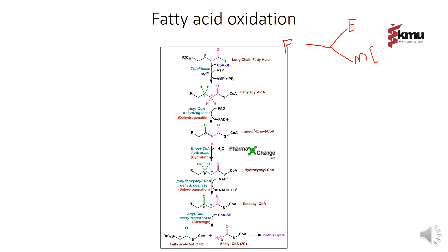Metabolism of fats means how we can obtain energy from fatty acids when no carbohydrates are available in the body, and how we convert polymers of carbohydrate-lipids into monomers. Fatty acid oxidation means how we can obtain energy from fat through a process of different steps.